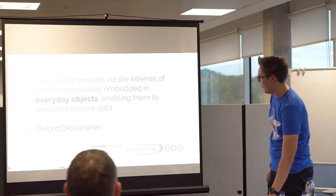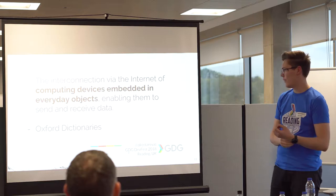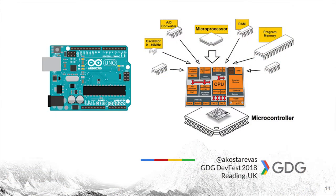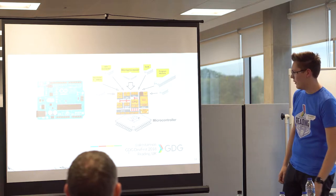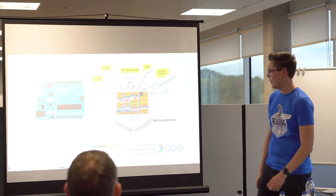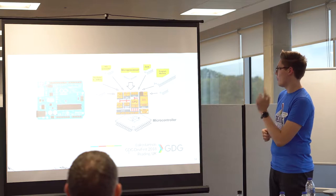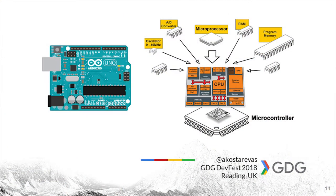Next up: computing devices embedded inside everyday objects — these are actually just microcontrollers. Everyone's hopefully seen an Arduino Uno. The Arduino Uno has an ATmega 328 microcontroller, which consists of a microprocessor, memory, program memory, an analog-to-digital converter, and most importantly an oscillator, which oscillates at a frequency that actually drives the microprocessor to run your embedded software.